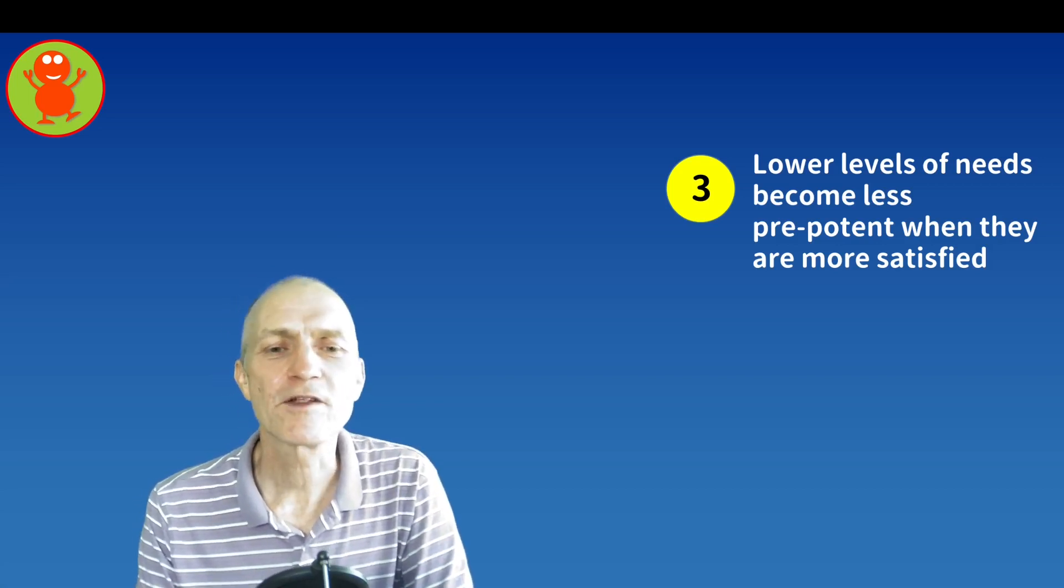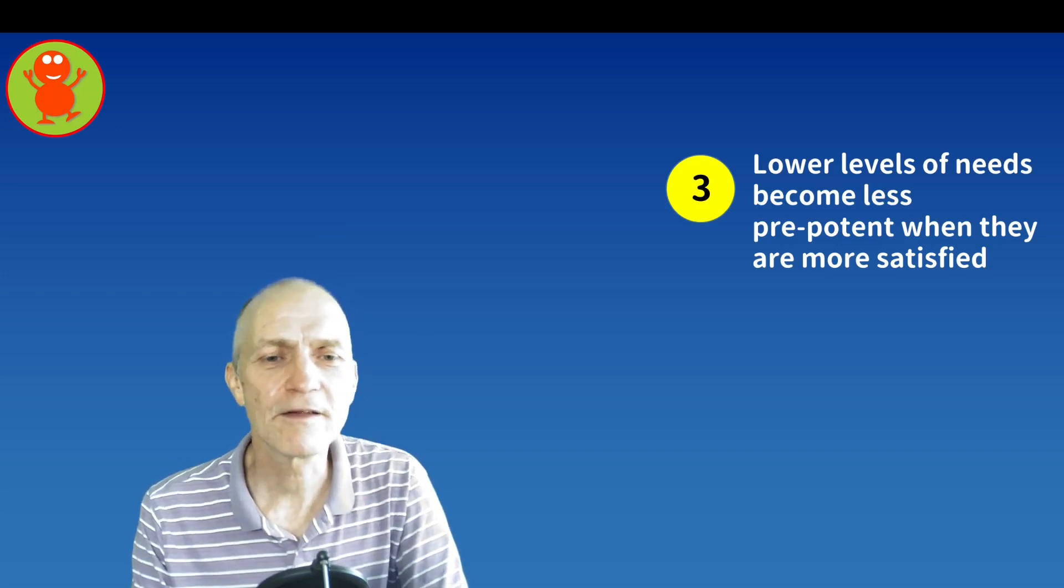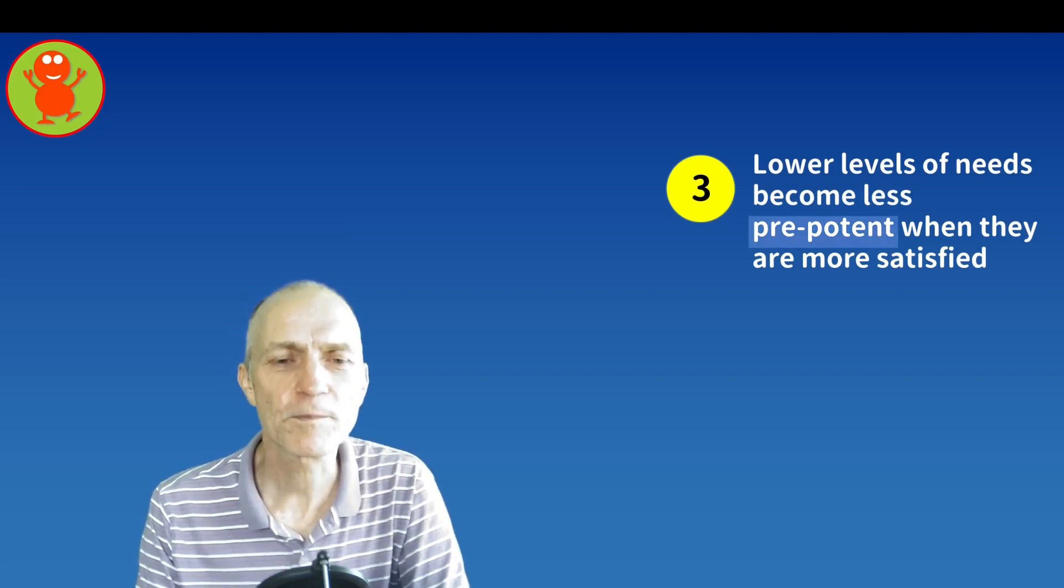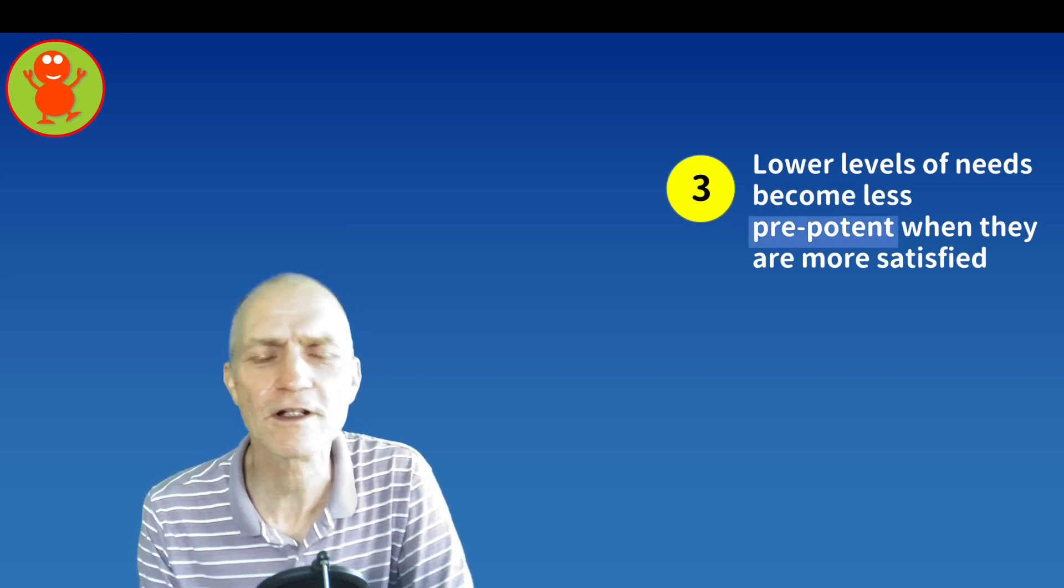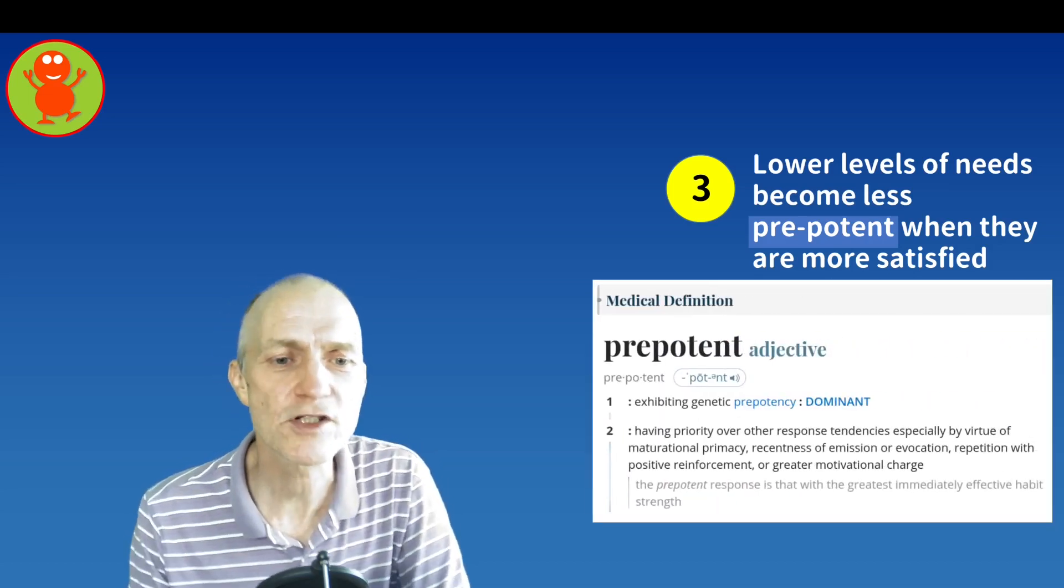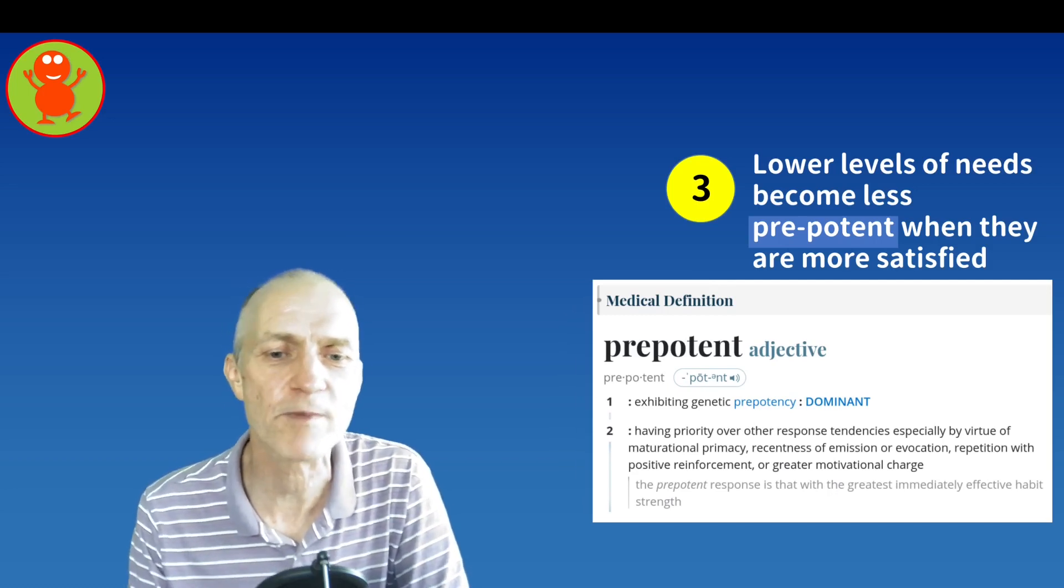Then you can start thinking about other issues in your life and the next level becomes the most dominant or prepotent one. Prepotent is a word that he used a lot in his 1943 paper. If you look at a dictionary it means something like dominant, having priority over other response tendencies.